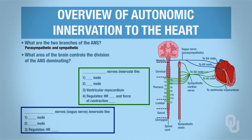Question 2: What area of the brain controls the division of the autonomic nervous system dominating? This is the cardiovascular control center, and this center is located in the medulla oblongata.